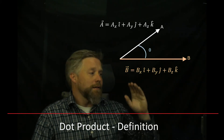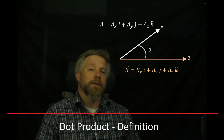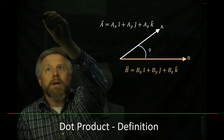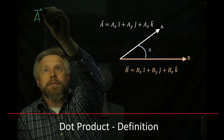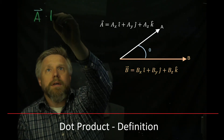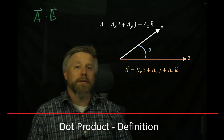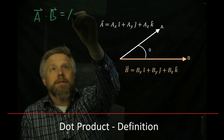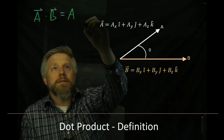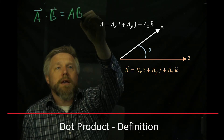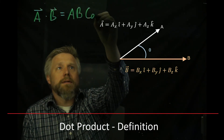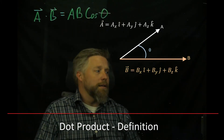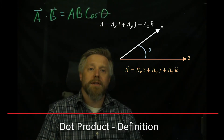If we take any two vectors and dot them together, we're always going to get the same thing: A dotted with B equals the magnitude of the first vector times the magnitude of the second times the cosine of the angle in between them. That is the definition of the dot product.